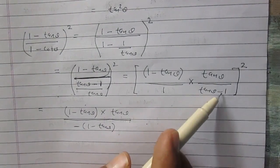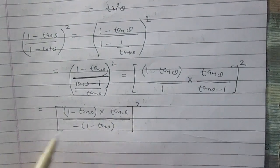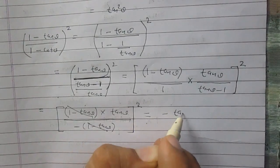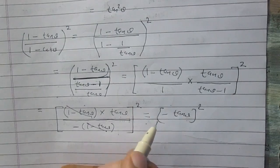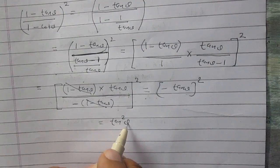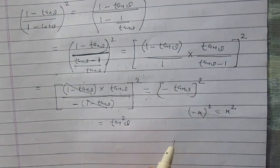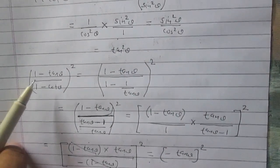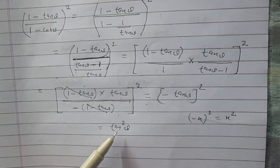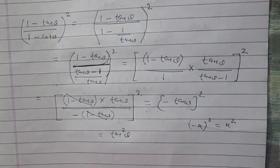Since (tanθ - 1) is minus of (1 - tanθ), the two (1 - tanθ) terms cancel inside the bracket, leaving only (-tanθ), whole square. And (-tanθ)² is nothing but tan²θ, since (-x)² = x². So once again we see that the middle term [(1 - tanθ) / (1 - cotθ)]² equals tan²θ. Therefore, all three terms are equal.